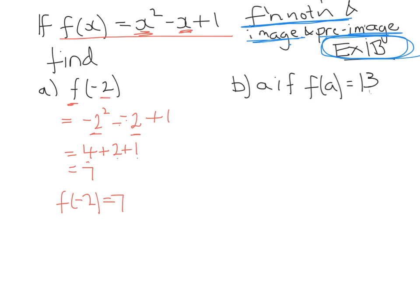Now what if we do a different one? What if we do the reverse process? What if we put in some number a and out comes 13? What number or numbers could we put in? Because remember this is a parabola, so it could be that there's 1 or 2 or maybe even 0 values that I could put in to get out 13. So if f(a) equals 13, and in place of x we put in a, this would be a squared minus a plus 1 equals 13.